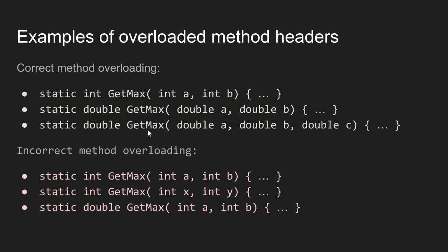In the third example, getMax is defined with three double input parameters and also returns a double. So if the user calls getMax and passes two double values, the compiler calls the first double getMax. If three double values are passed, the compiler calls the third getMax. Depending on the input parameter pattern, the compiler knows which of these three getMax methods to call.